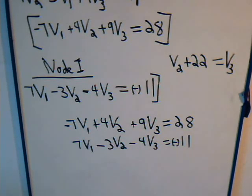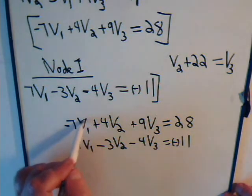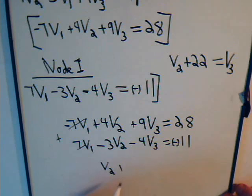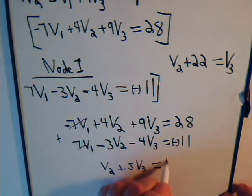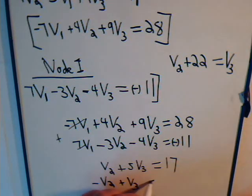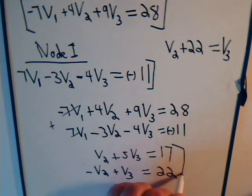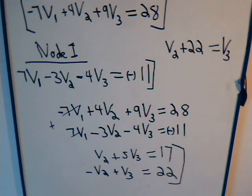We don't even need determinants to solve the unknowns here. Adding the super node equation and the node one equation, the V1 terms cancel, leaving: V2 plus 5V3 equals 17. Combined with the constraint V2 plus 22 equals V3 — equivalently minus V2 plus V3 equals 22 — we can determine V2 and V3, then backtrack to find V1. We won't have enough time to complete that in this video, so join us in the next video where we'll get this problem taken care of pretty quickly.